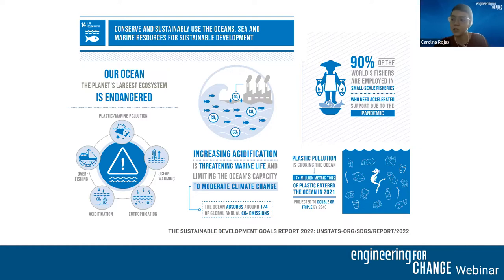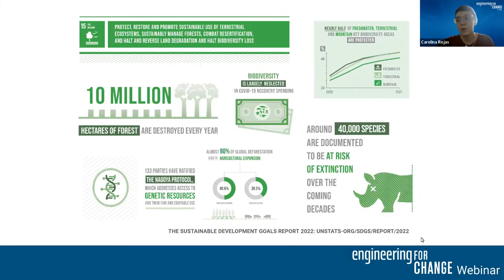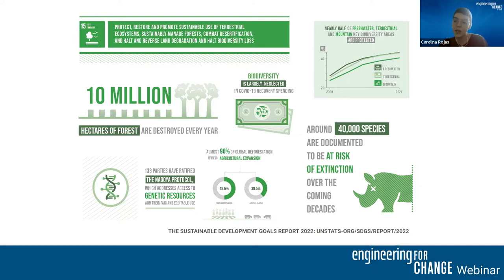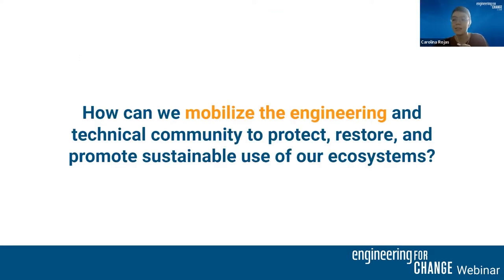Currently, there is a need to restore fish stocks which are threatened from overfishing, illegal, unreported, and unregulated fishing, to ensure a sustainable contribution of fisheries to economic growth. Our human activities have also put enormous pressures on our terrestrial ecosystems. Over the coming decade, more than 40,000 species are at risk of extinction. We keep losing habitats — 10 million hectares of forests are being destroyed each year, mainly due to agriculture. Although progress has been made in protecting key biodiversity areas, more than half remain unprotected. Biodiversity has been largely neglected in COVID-19 recovery.